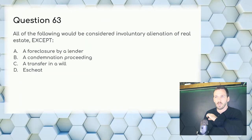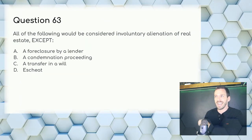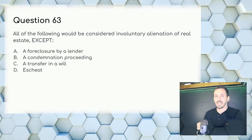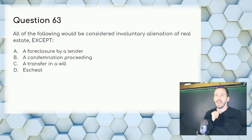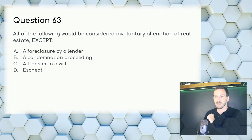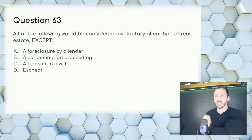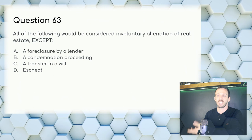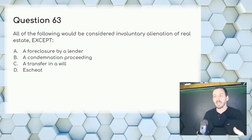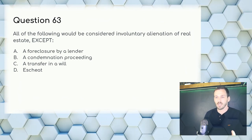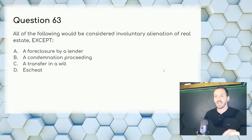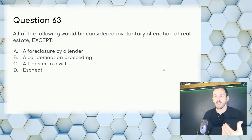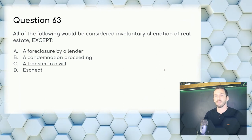Question 63: All of the following would be considered involuntary alienation of real estate except — involuntary means not wanting to or out of one's control. Foreclosure and condemnation are out of your control. You do write your own will, however, so you have control there. Answer: C, a transfer in a will.